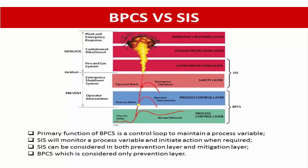This picture shows the SIS, BPCS, and other layers of protection. You can see it accurately presents the difference between BPCS and SIS. The first and second layers are under control within the BPCS — for example, the process control system itself and operator control. Automatic actions triggered by process variables, such as the Emergency Shutdown system, or ESD, or Fire and Gas system, are considered as the Safety Instrumented System. We can notice the SIS can be considered in both the prevention layer and mitigation layer, whereas the BPCS is considered only in the prevention layer, not the mitigation layer.